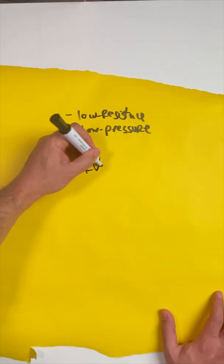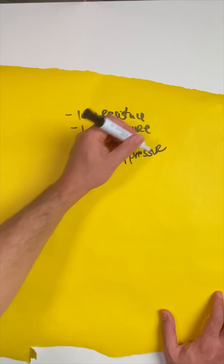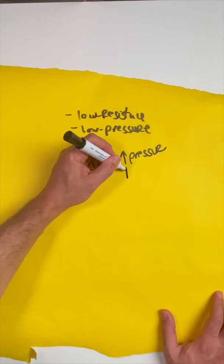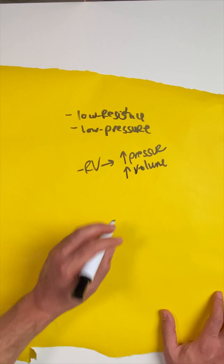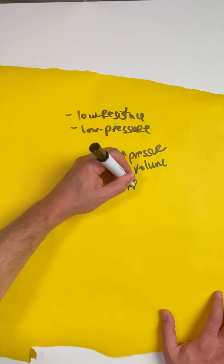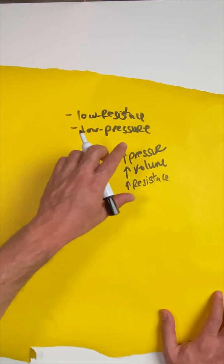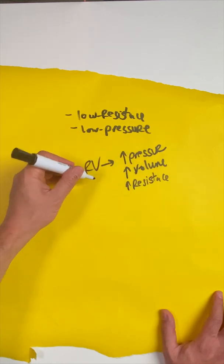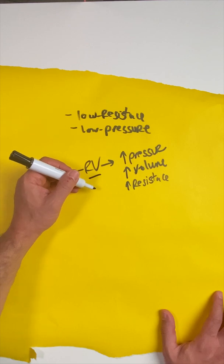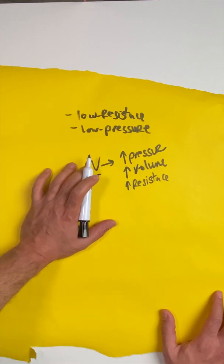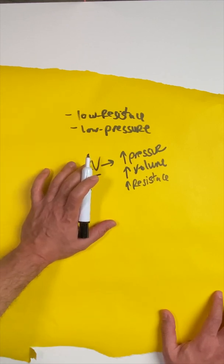Know that the RV doesn't like acute increases in pressure. It can't handle it. Know that it doesn't like increases in volume. It can't handle it. Know that it doesn't like increases in resistance. Can't handle it. So if any of these happen acutely, the RV will not be able to handle it. Over time with chronic changes, the RV will adapt and become hypertrophied. But for the purposes of this crypt, we're just going to be talking about the acute problems.